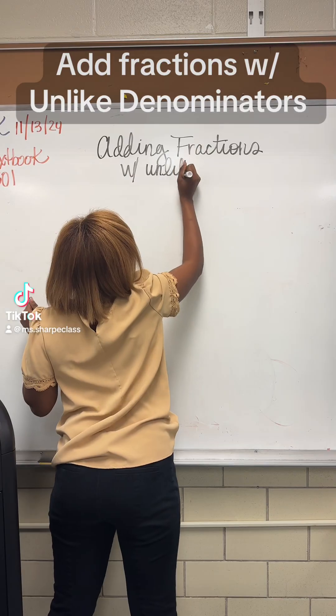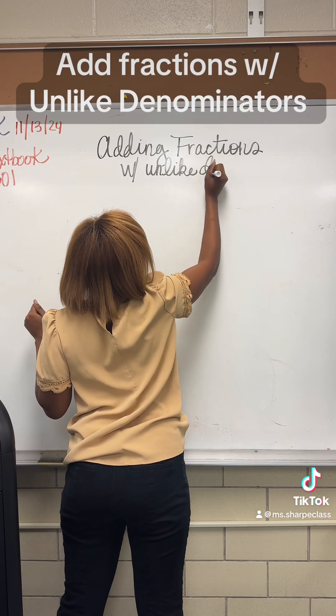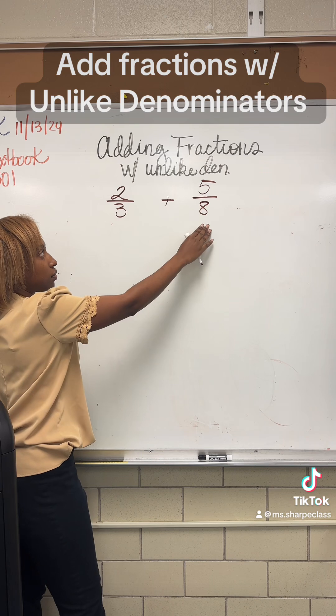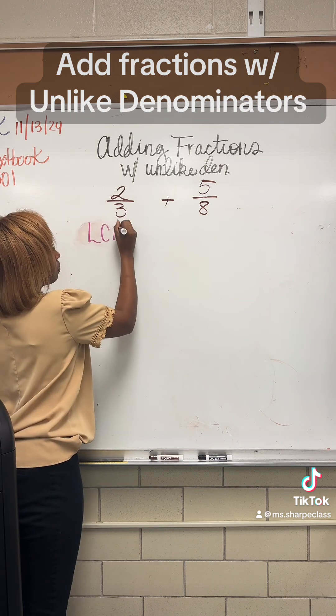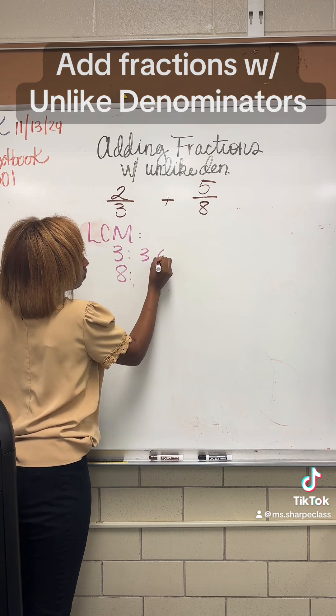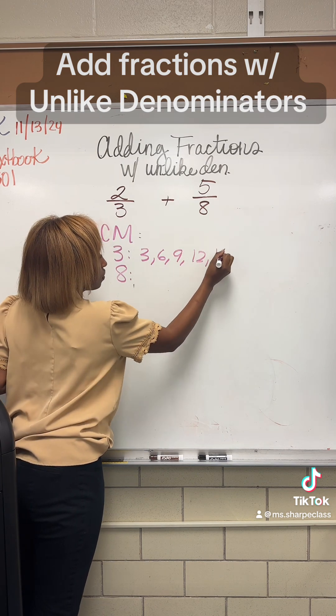Hey Sharpies, let's add with unlike denominators. Today we're going to start with 2 thirds plus 5 eighths. Clearly the denominators are not the same, so we must look at their lowest common multiple.